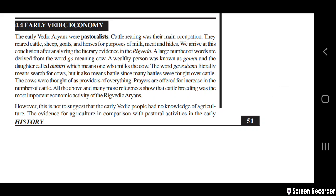Early Vedic Economy: the early Vedic Aryans were pastoralistic — cattle rearing was their main occupation. They reared cattle, sheep, goats, and horses for milk, meat, and hide. A large number of words in the Rigveda are derived from the word 'Go' meaning cow. A wealthy person was known as 'Gomat,' and the daughter was called 'Duhitri,' meaning one who milks the cow. The word 'Gavishana' literally means 'search for cow' but also means battle, since many battles were fought over cattle. Cows were thought of as providers of everything, and prayers were offered for increase in cattle numbers.